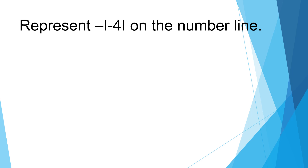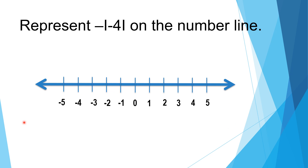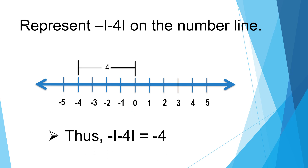Represent the negative absolute value of negative four on the number line. What is the distance of negative four from zero? Let's count how many units: one, two, three, four — four units. Placing a negative sign outside the absolute value bars gives you a negative result. Thus, negative absolute value of negative four is equal to negative four.